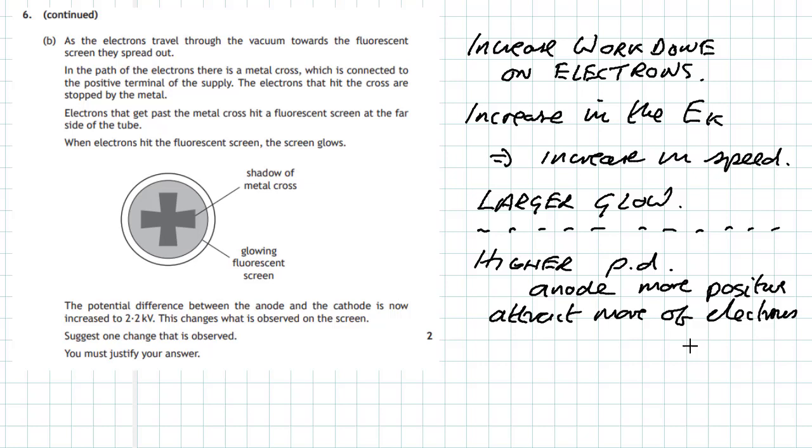If it attracts more of the electrons, then the shadow becomes sharper. The shadow edges become sharper.